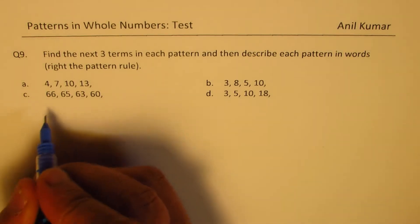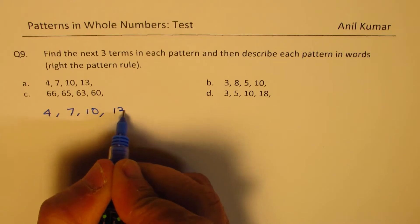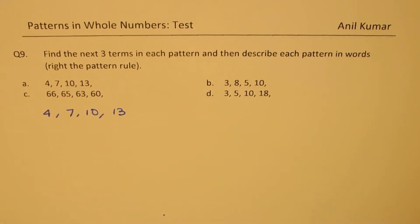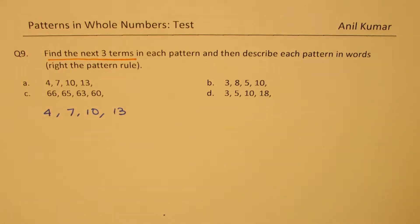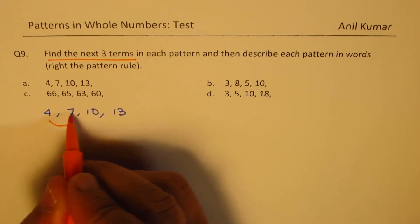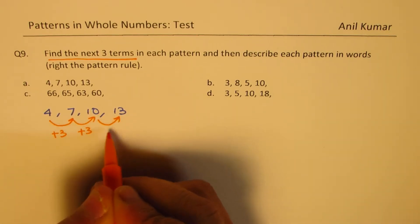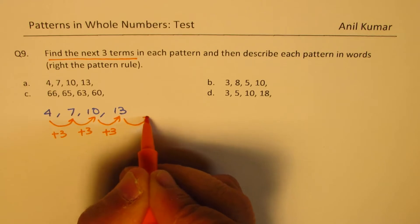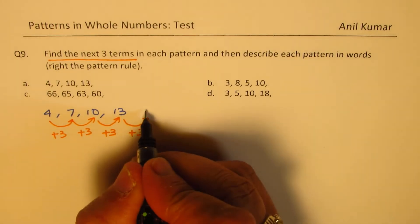Let's begin with the very first one, which is 4, 7, 10, 13. Now to find the pattern and write the next three terms, we should see how it is growing. It is definitely growing. From 4 to 7 we are adding 3, and then again we are adding 3, and this process is repeated. So every time we are adding 3 to get the next number. So if I add 3 to 13, what will I get? Well, 13 plus 3 is 16.